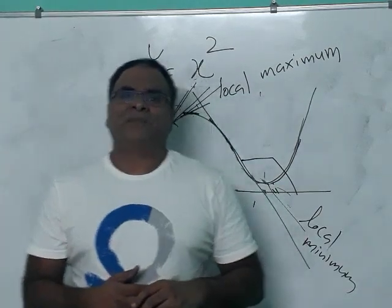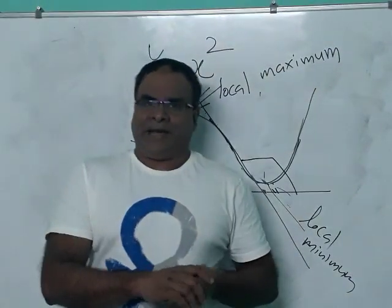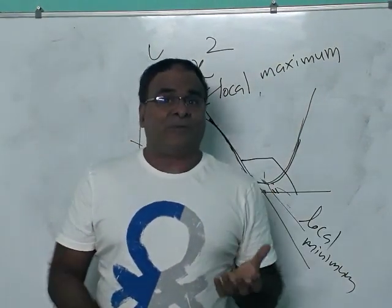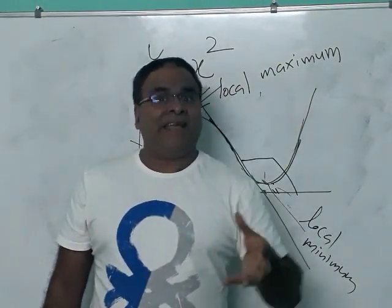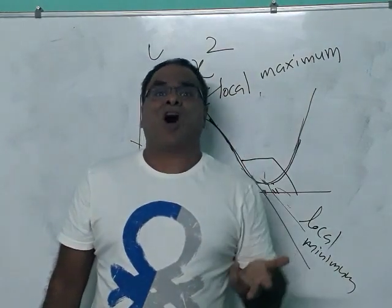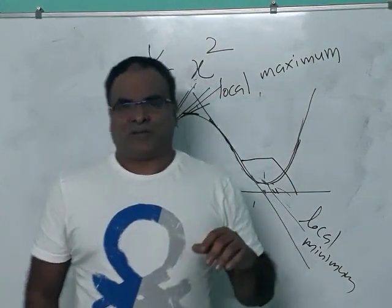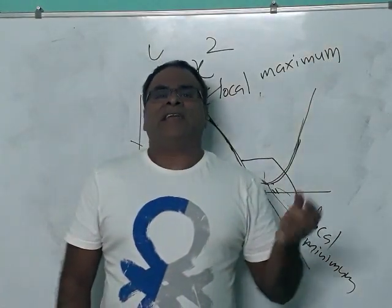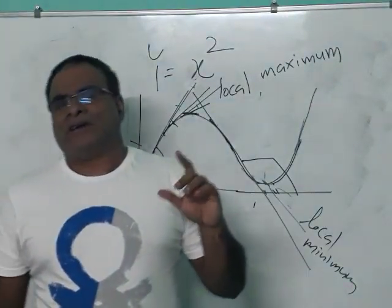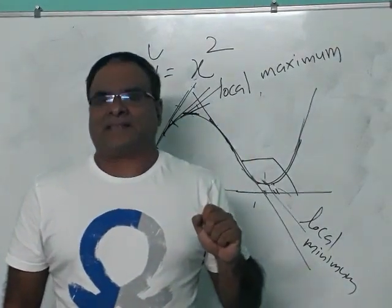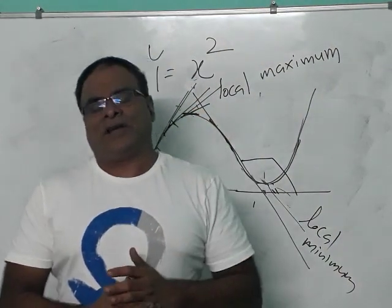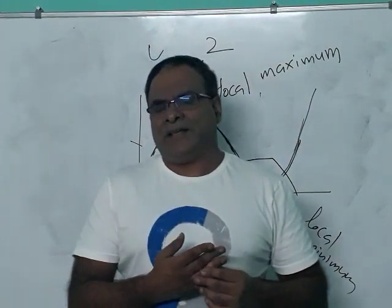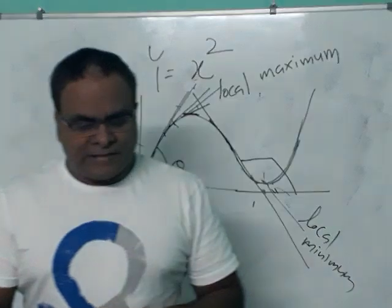We discussed in the last video about gradient descent — what does it mean, what is gradient? Gradient means slope. In the previous video, you need to watch the first part of gradient descent. Gradient simply means slope. It is equal to y/x, or in differential calculus dy/dx.